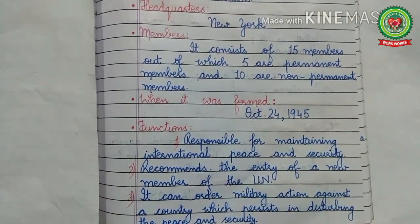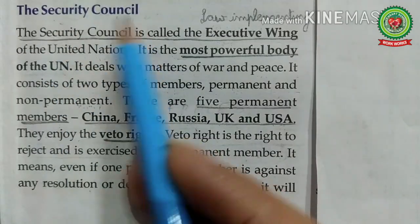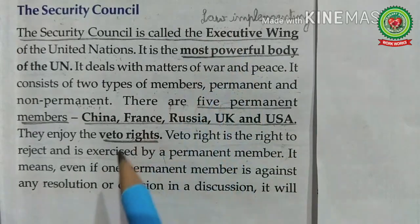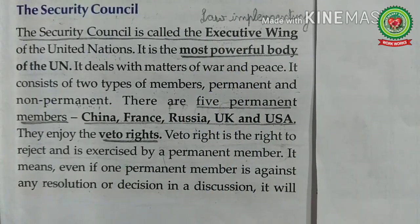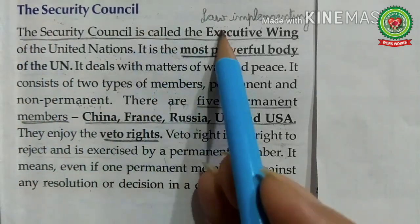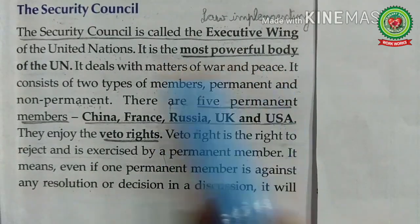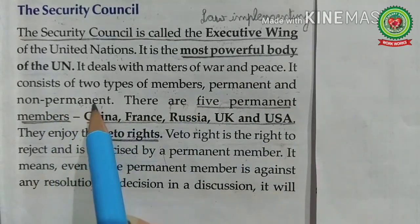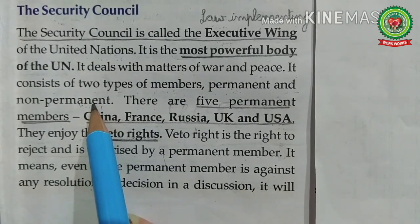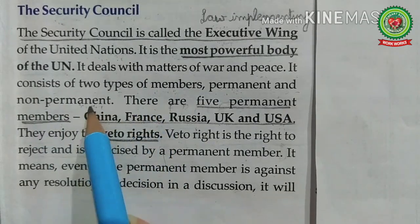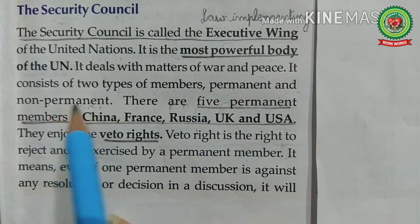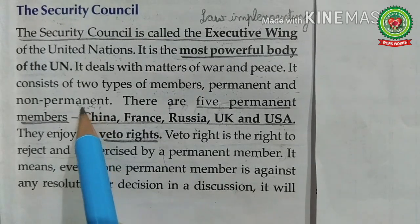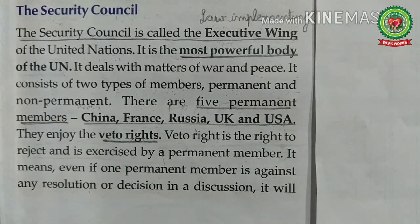Now let us read the Security Council from the book. The Security Council is called the executive wing of the United Nations — executive means law-implementing. The General Assembly is the law-making body, whereas the Security Council is the law-implementing body of the United Nations. It is the most powerful body of the UN and deals with matters of war and peace. It consists of 15 members: 10 non-permanent members and 5 permanent members. Non-permanent members are elected by the General Assembly for two years on a regional basis, and each member of the Security Council has one vote.